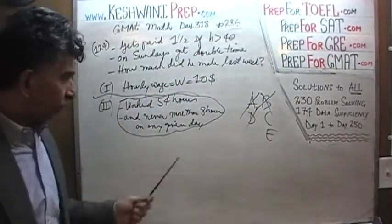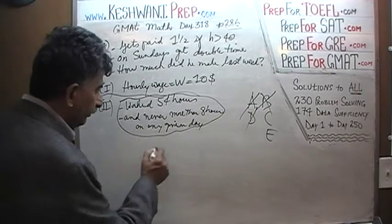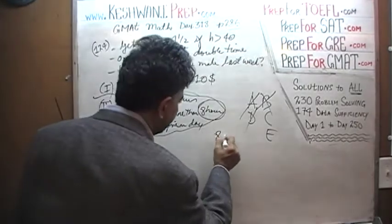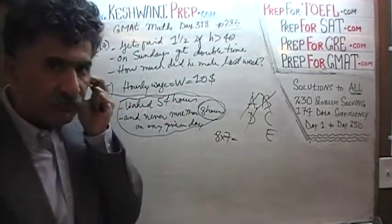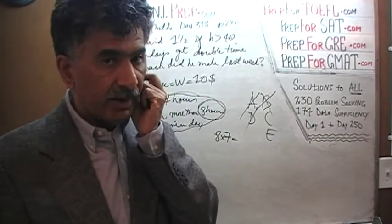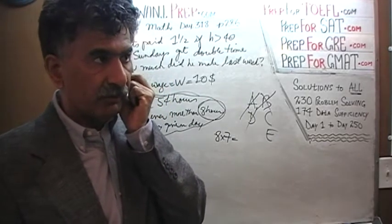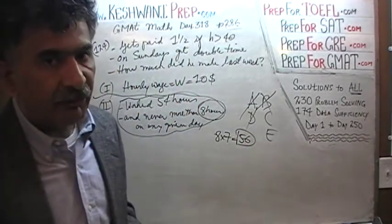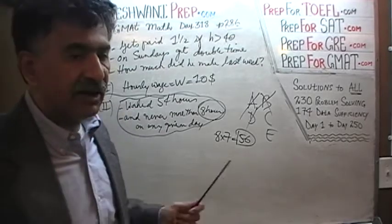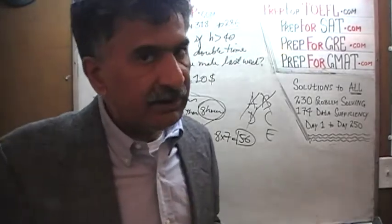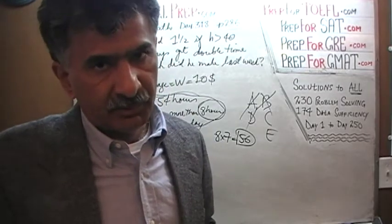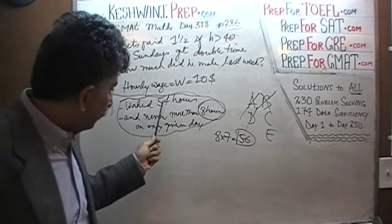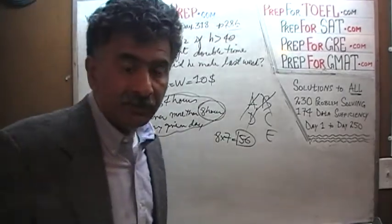Combining both statements: he worked 54 hours and never more than 8 hours per day. We know 8 times 7 is 56, so 56 hours would be exactly 8 hours every day for all 7 days. He worked only 54 hours — that is 2 hours less than 56. The question is: on which day did he work 2 hours less?